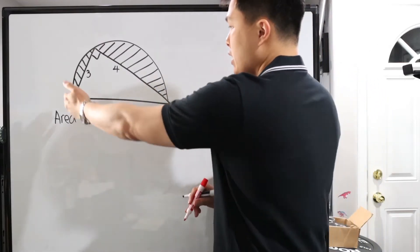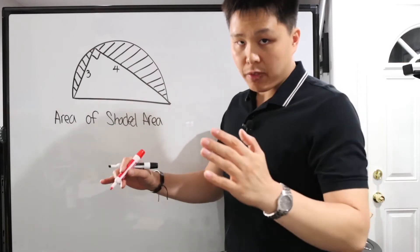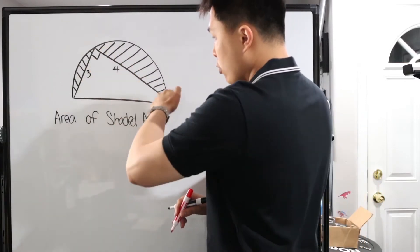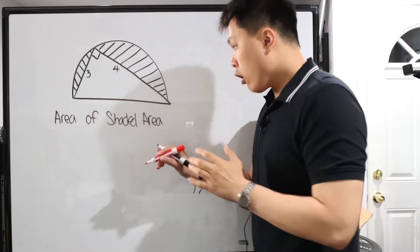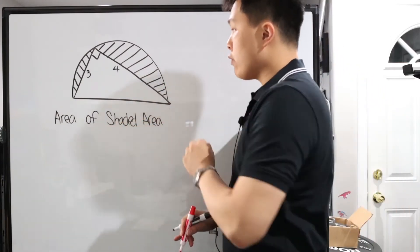Here's what we have. This is a semicircle, so basically a half of a circle. We have a triangle in the middle and this indicates that it is a right triangle. Our job in this case is to find the area of the shaded region.